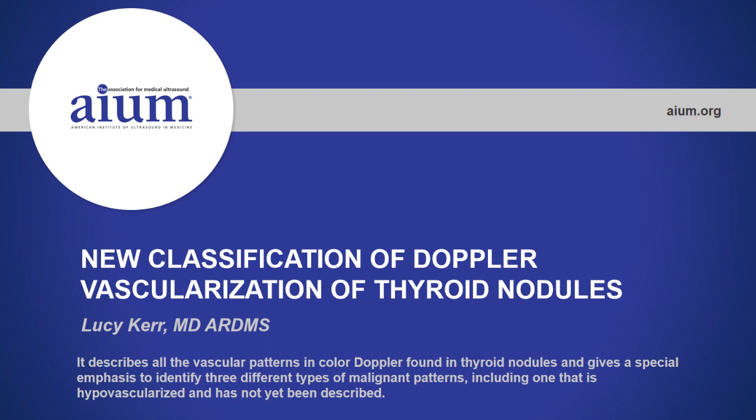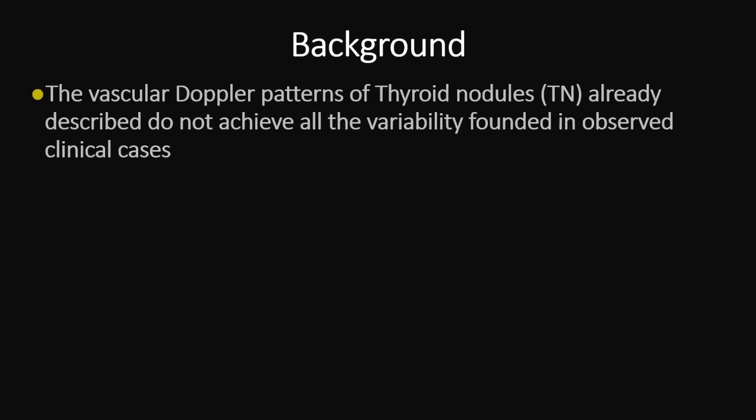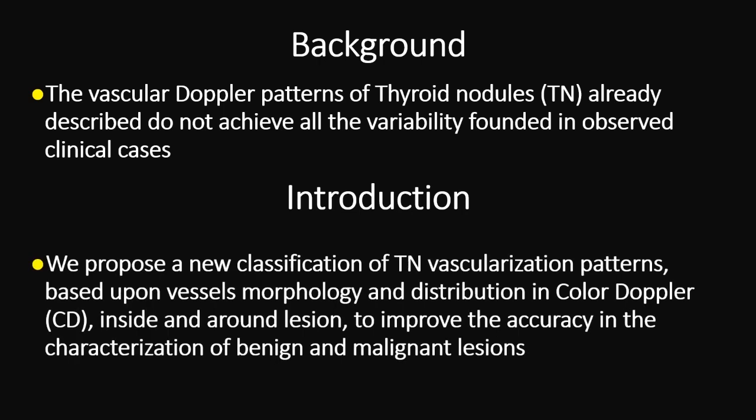We propose a new classification of Doppler vascularization of thyroid nodules. The existing vascular Doppler patterns already described do not capture all the variability found in clinical cases. For this reason, we propose a new classification of thyroid vascularization patterns based on vessel morphology and distribution in color Doppler inside and around the lesion, to improve accuracy in characterizing benign lesions.